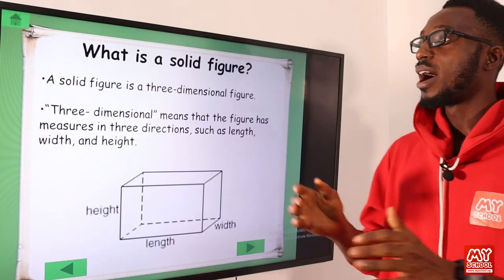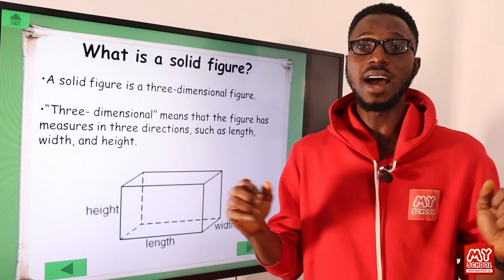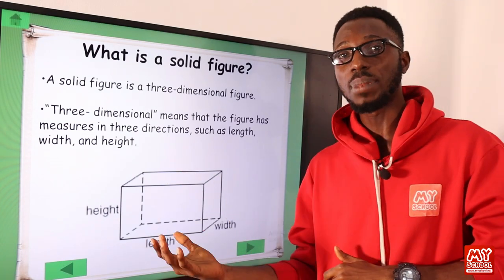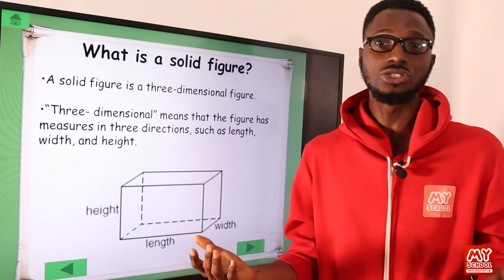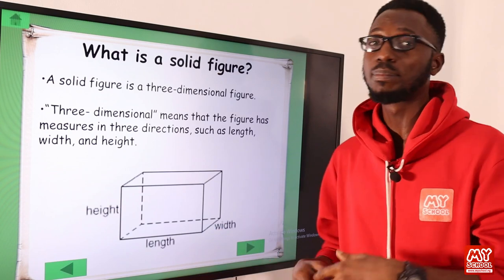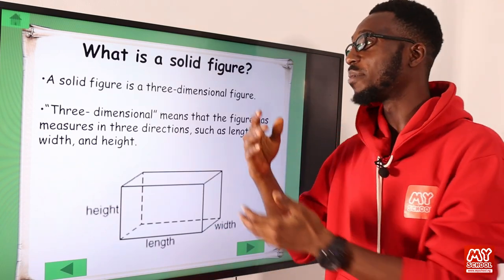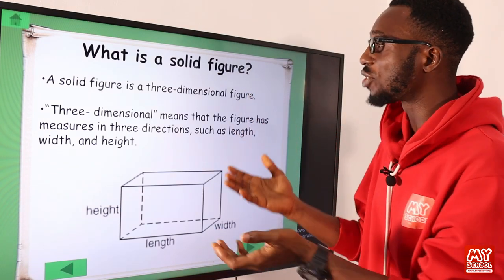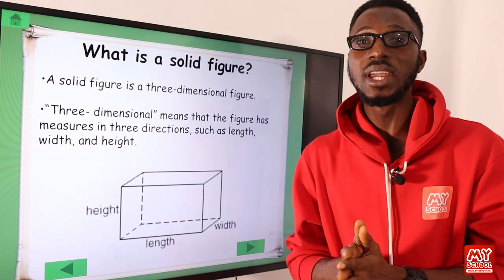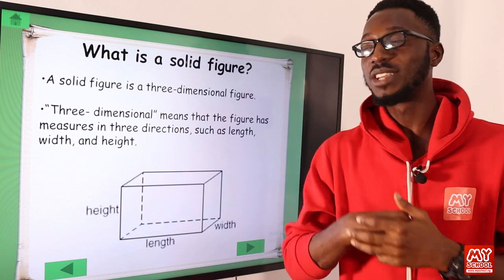When it comes to shapes, we have the solid shape and we have the plane shape — or you can say solid figures and plane figures. You can call the solid shapes 3D shapes.